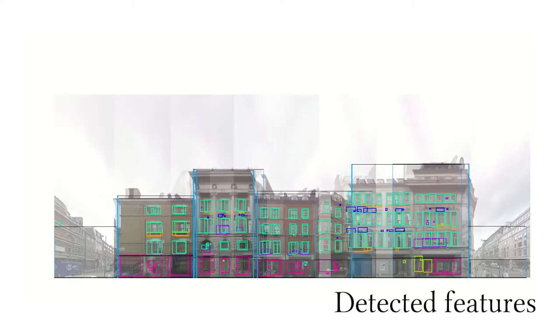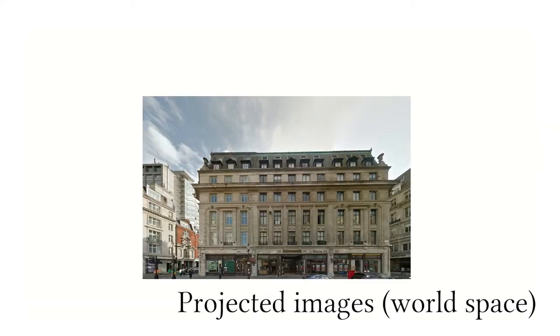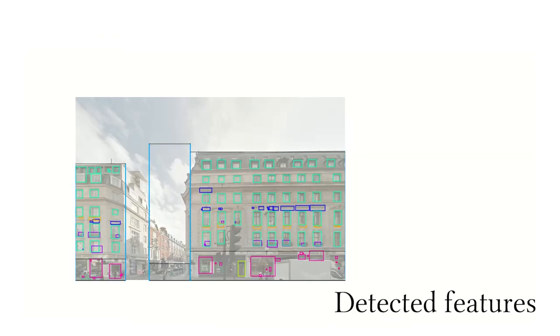For each image, we use a CNN to detect features. For example, we detect windows, doors, and facade boundaries. The image locations often contain noise.